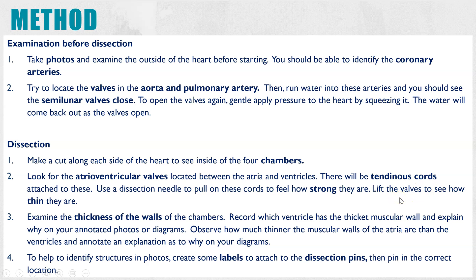Next, examine the thickness of the muscular walls of the different chambers. Key things to note are the thickness of the left ventricle muscular wall in comparison to the right, and annotate any photos to explain why the left ventricle has a thicker wall. Also compare the thickness of the atria walls versus the ventricles and annotate why. If you want to know the reasons, I'll link my video on heart structure and function.